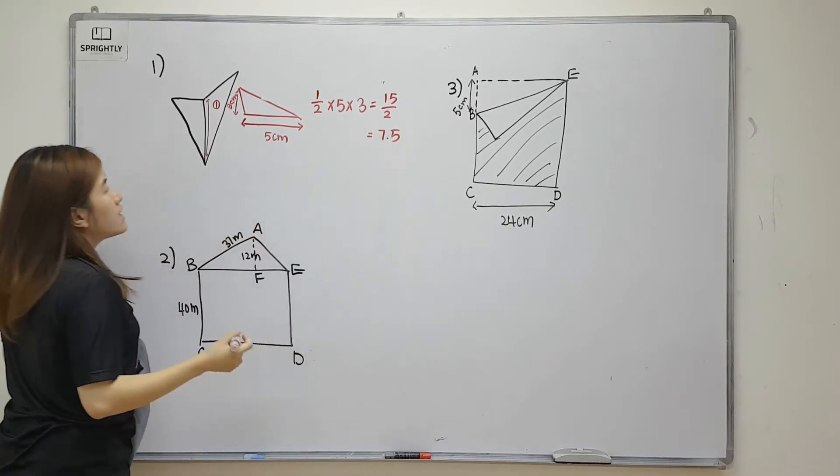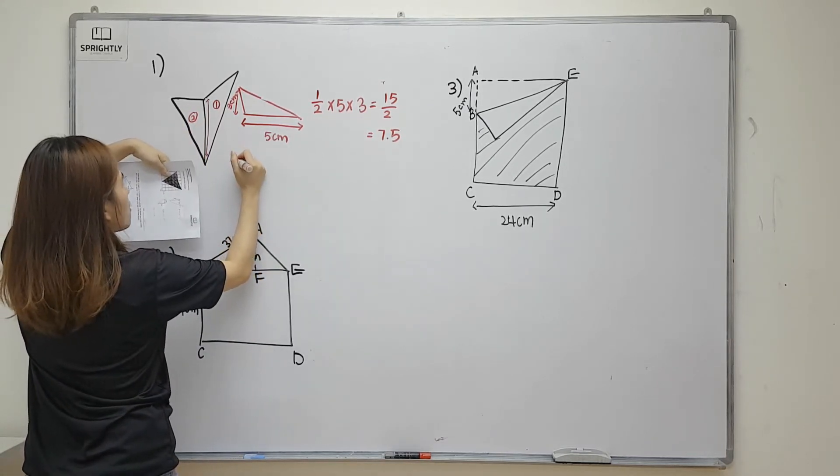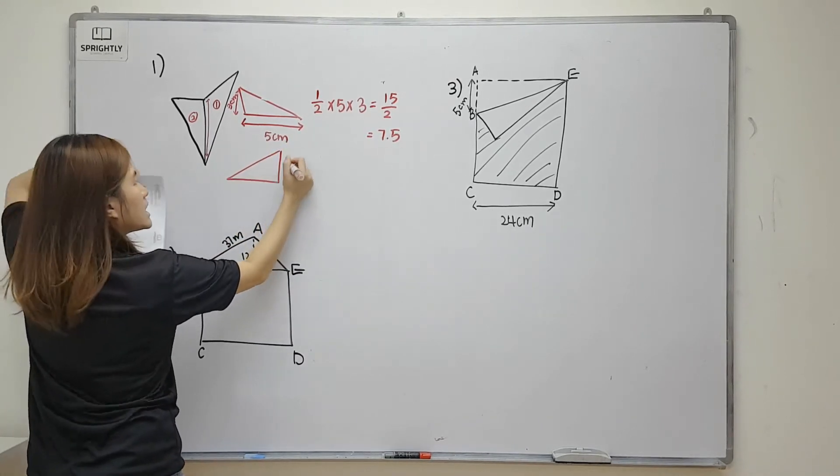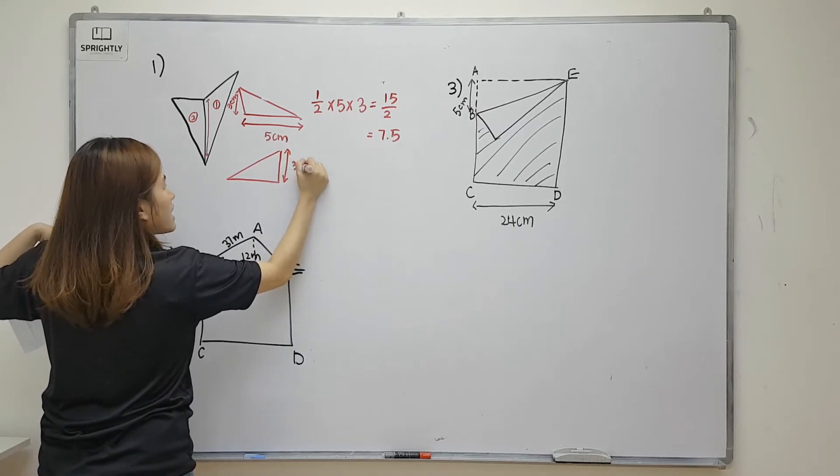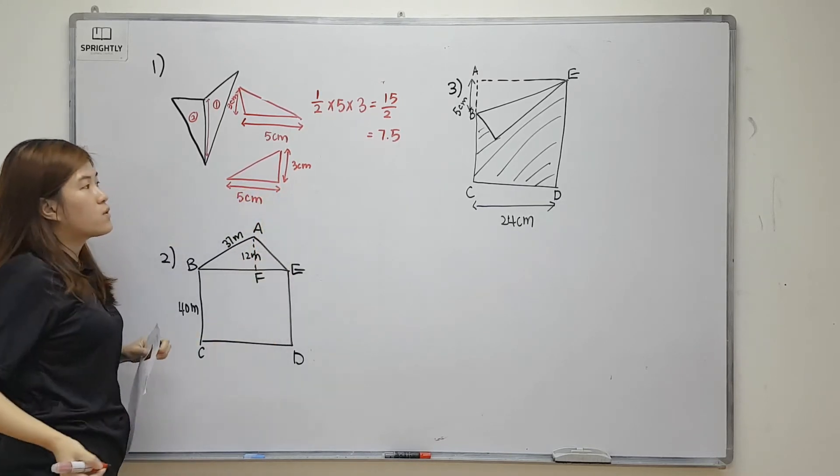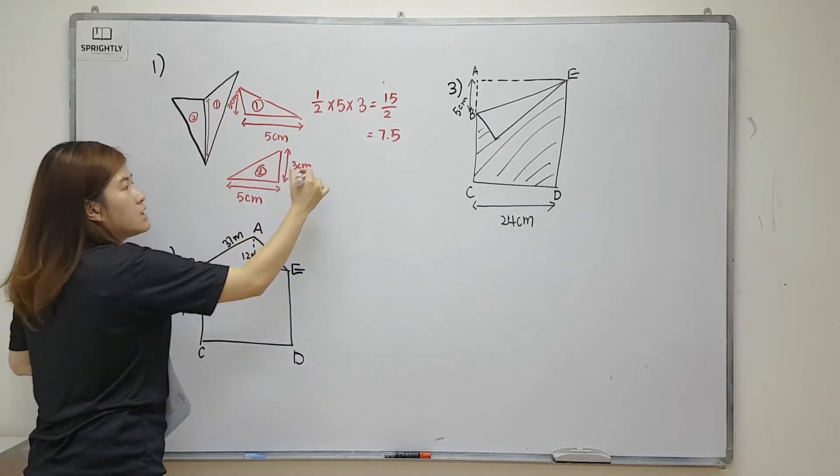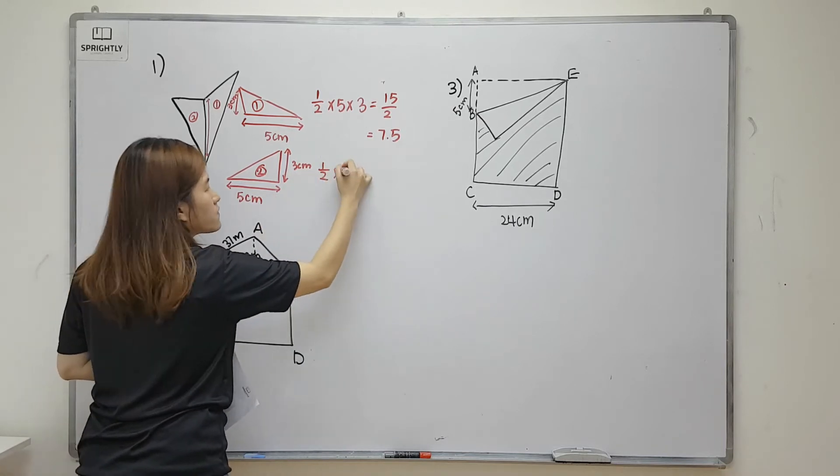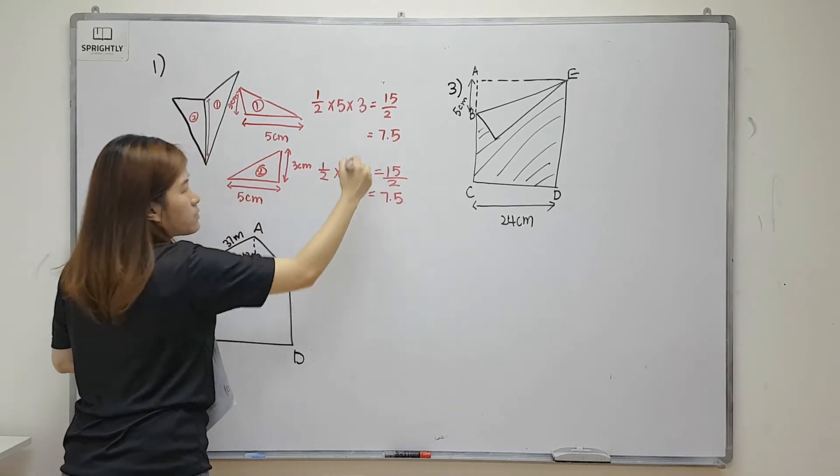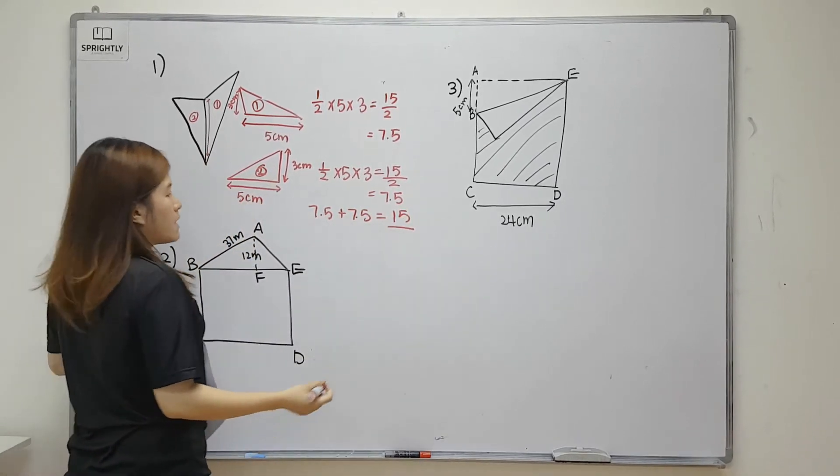Now let's look at triangle number two. If I turn it around like this, I will get a triangle that looks like this with the right angle here. So this will be 3 cm and the base, if you count the number of squares, should be 5 cm. The area of triangle number two: half times base which is 5 times height 3, you get 15 over 2 again, 7.5. When you add these two together, 7.5 plus 7.5, you should be able to get 15.